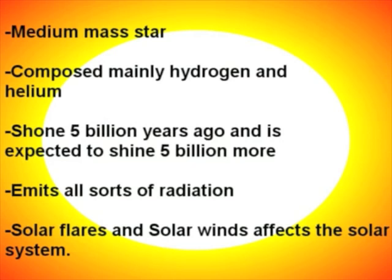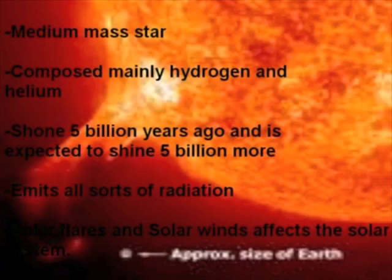The sun is at the center of our solar system, where everything orbits around. The sun is a medium mass star composed mainly of hydrogen and helium. It is essential to life on Earth. It first shone five billion years ago and will shine another five billion more. It emits all sorts of radiation. Solar flares and solar winds also affect much of the solar system.